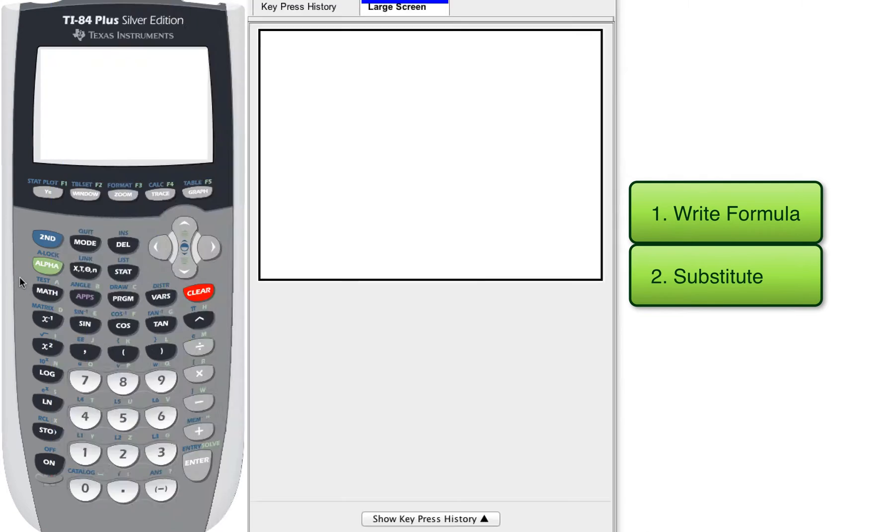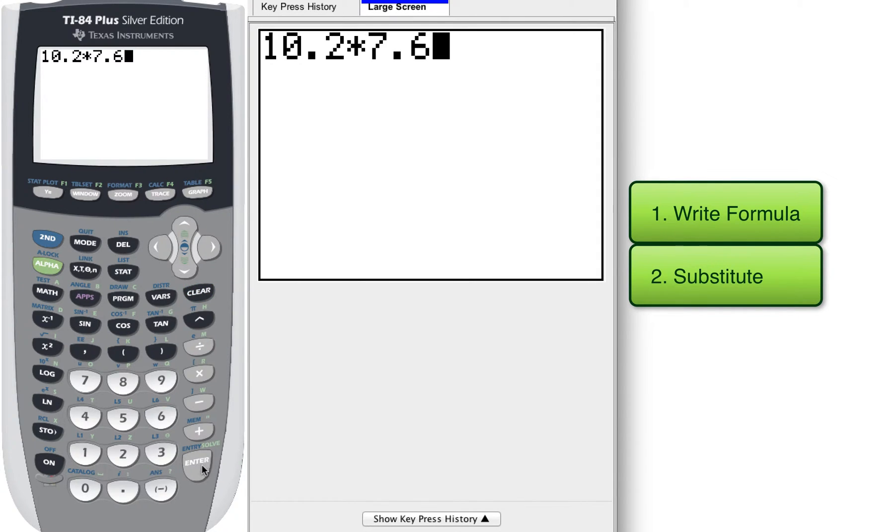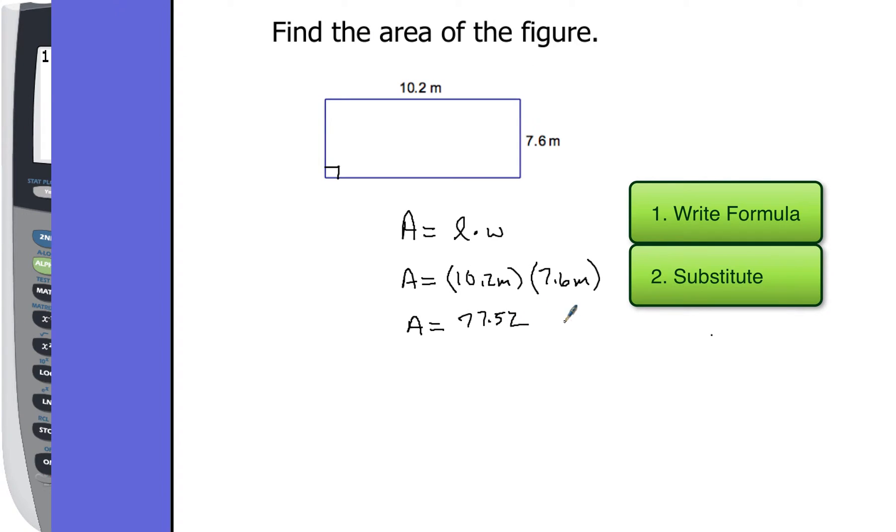So we're going to go ahead and use our calculator to help us with that. When we do that, we end up with a total of 77.52. Here's where you have to be really careful. Don't just stop there and make sure that you write down your units. And our units for area are going to be square units, and in this case we're working with meters, so that's going to be square meters. So the area of this figure is going to be 77.52 square meters.